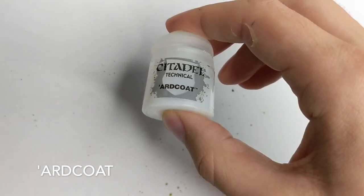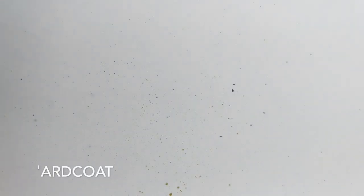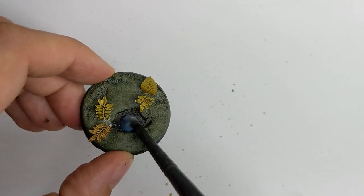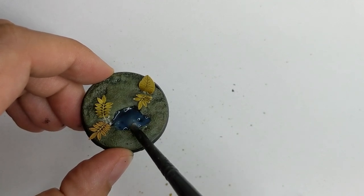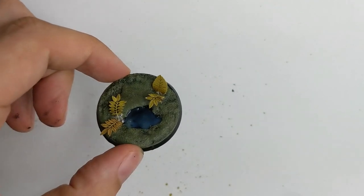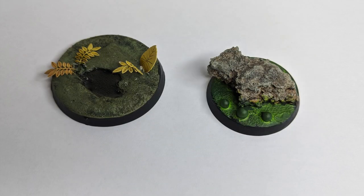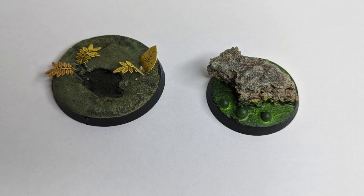The last thing to do is to paint our pool on the base with the 'Ardcoat. Or if you have any other water effect you can use it to create some nice reflection on it. And then after that just paint the rim of the base black and your bases are done.